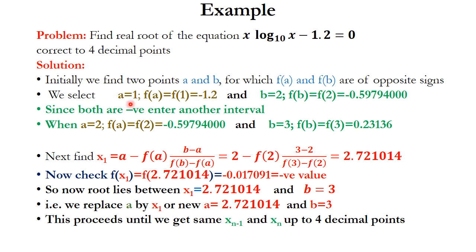We select a = 1, giving f(1) = −1.2, and b = 2, giving f(2) = −0.5979. Since both are negative, we cannot confirm a root lies in [1, 2], so we take another interval: a = 2 with f(2) = −0.5979, and b = 3 with f(3) = 0.23136. We then calculate the first approximate root as x₁ = a − f(a)·(b−a)/(f(b)−f(a)).